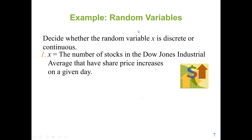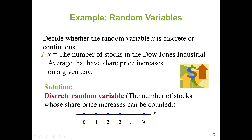Let's decide whether a random variable x is discrete or continuous. Focus on the key distinction: discrete means counting, continuous means measurement or uncountable. The first question: the number of stocks in the Dow Jones Industrial Average that have share price increases on a given day. The key word is 'number of stocks' — we are counting them, so this is a discrete random variable.